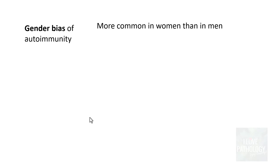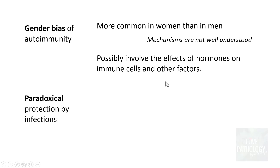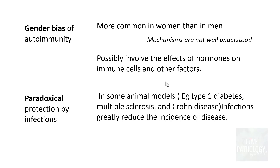There is a gender bias in autoimmunity — autoimmune diseases are more common in women compared to men. The mechanisms are not well understood, but a possible mechanism involves the effects of hormones on immune cells. Paradoxically, infections can provide protection in some animal models — for example, in type 1 diabetes mellitus, multiple sclerosis, and Crohn's disease, infections greatly reduce the incidence of disease.